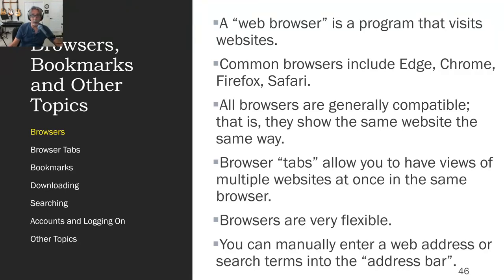Common browsers include Edge, Chrome, Firefox, and Safari if you're on Apple machines. All the browsers are mostly compatible — their job is to go to a website like Google or Amazon or Facebook, get the data, and display it on the screen in almost exactly the same way: the same colors, the same divisions, the same outline.